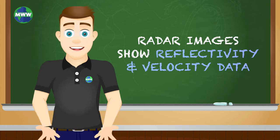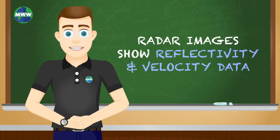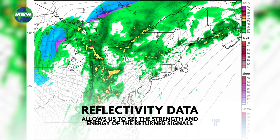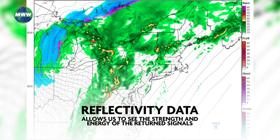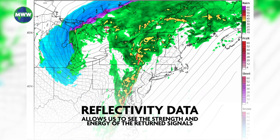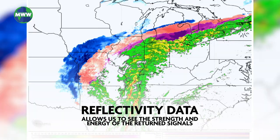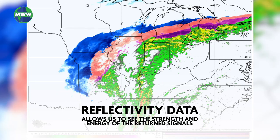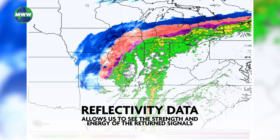Radar images show reflectivity and velocity data. Reflectivity data allows us to see the strength and energy of the returned signals, the size of a storm, and how heavy the precipitation will be.